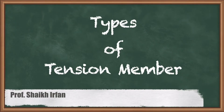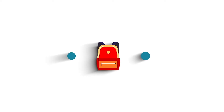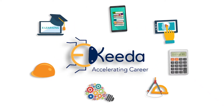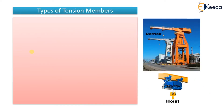In this video we are going to see types of tension members. When talking about types of tension members, they will not be the types of sections — angle section, channel section, I section — those are not the types of tension members. Those are the types of cross sections that are used as tension members.